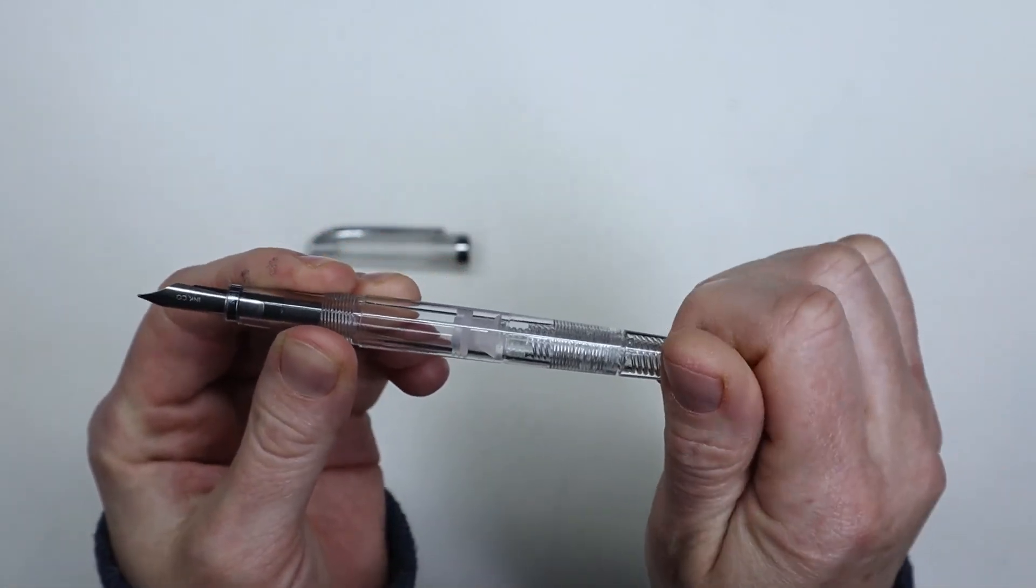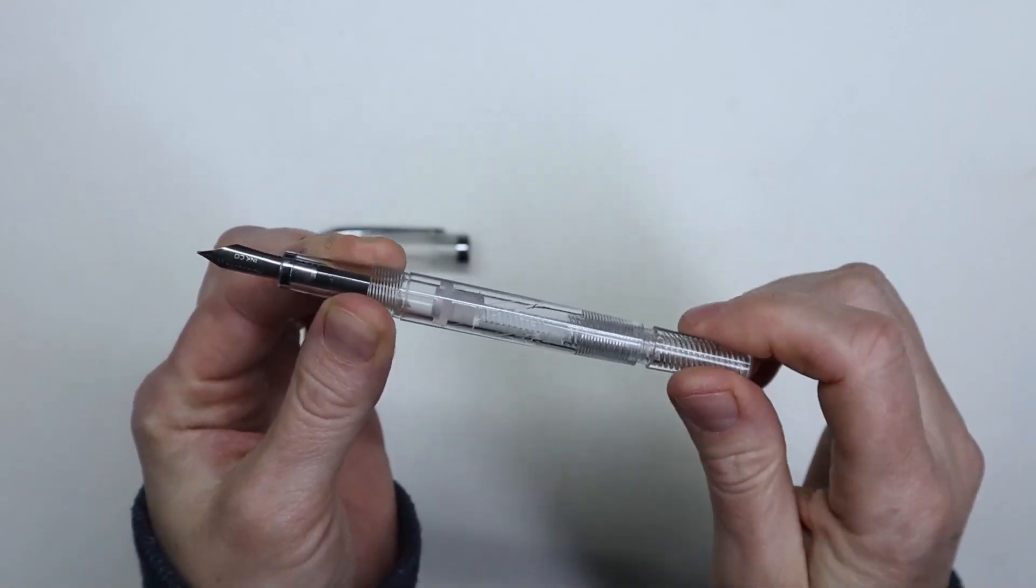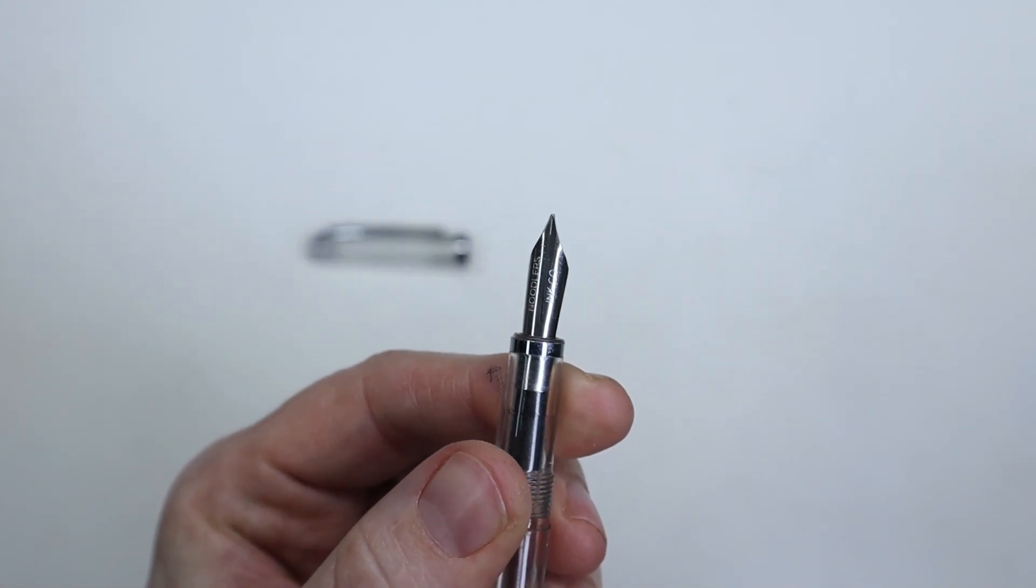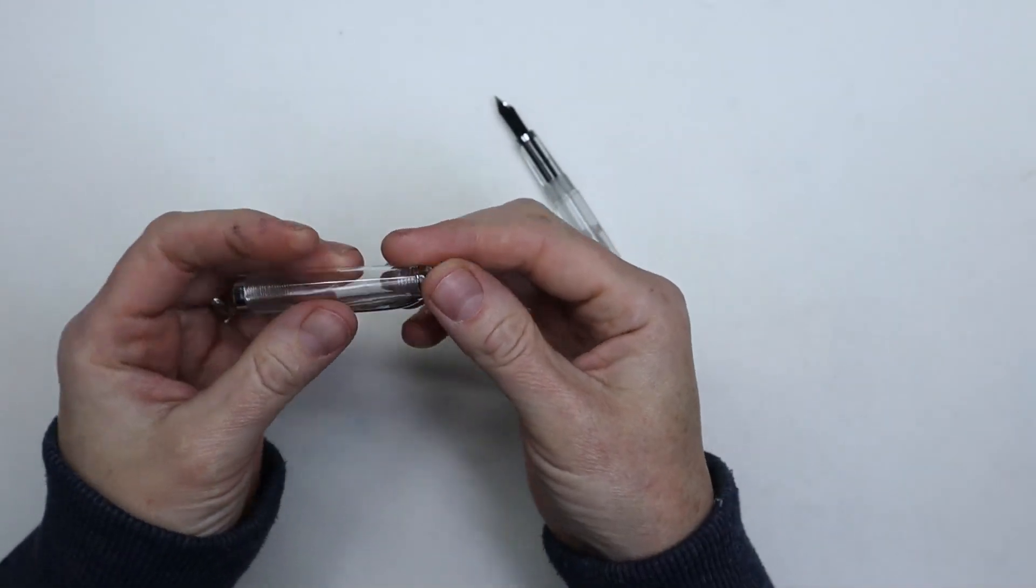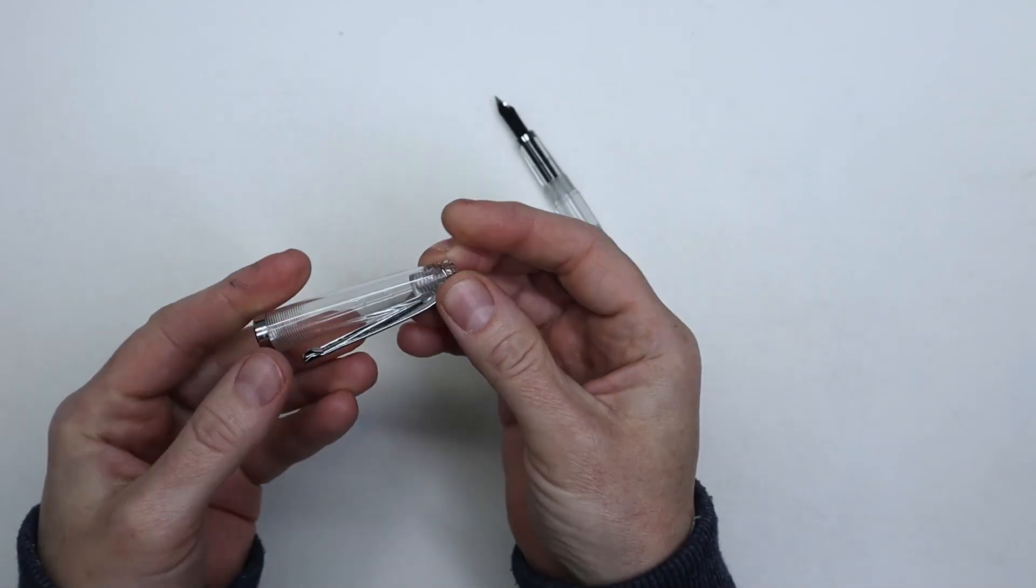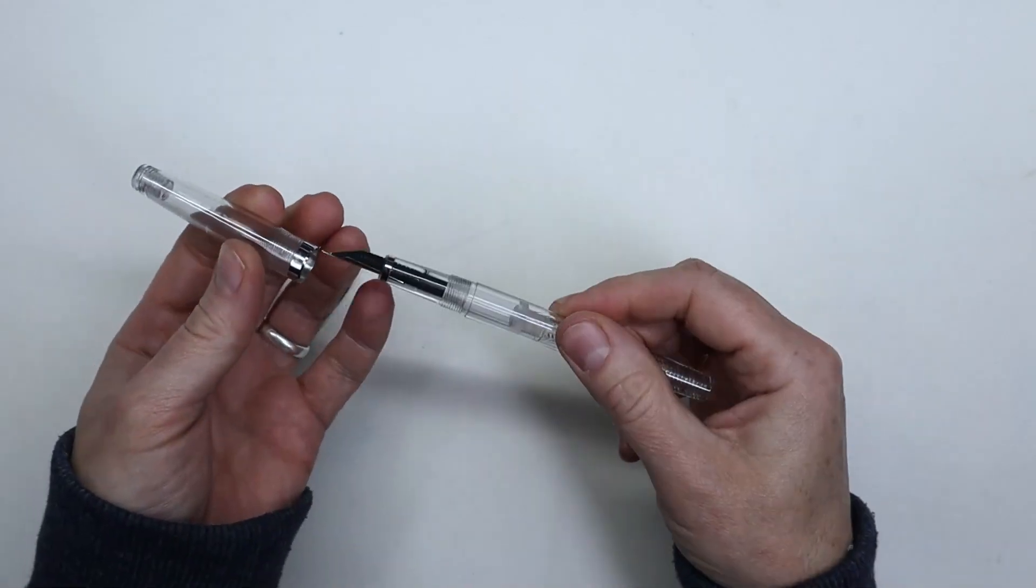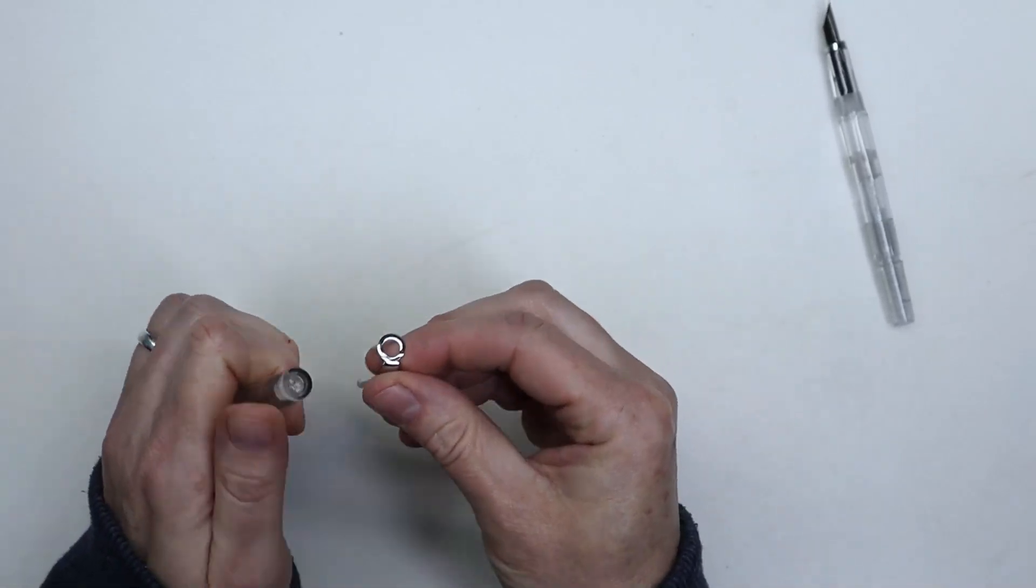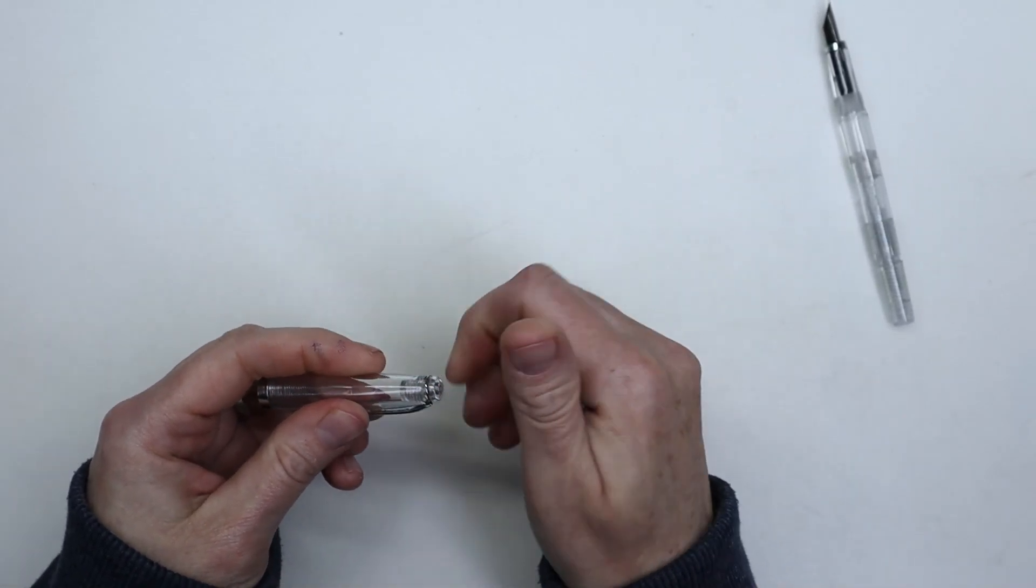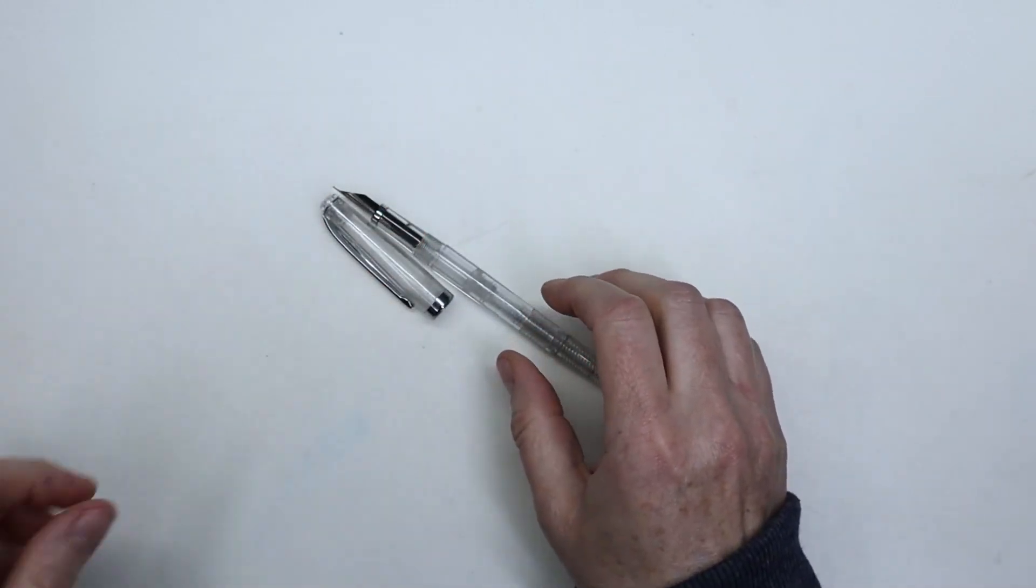For the Noodler's Flex Pen, I got the demo one, which is basically a demonstrator where it's all clear so you can see the color of the ink inside. You can fill up the whole body with a piston, which is great because it contains a lot of ink. You can also unscrew the clip that's attached to the cap, so if you don't like having clips on your pen, you have the option to remove it.